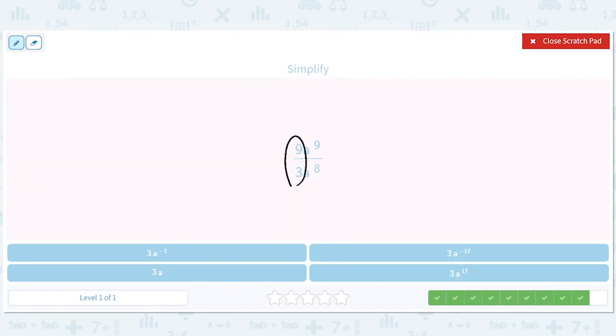And finally, we have 9 divided by 3 equals 3. And we have a to the 9 minus 8 equals a to the 1, or just a.